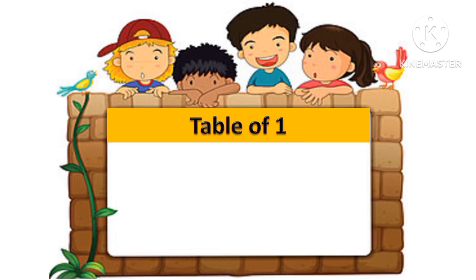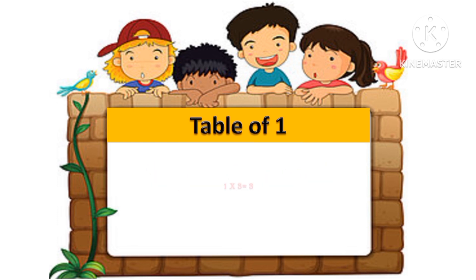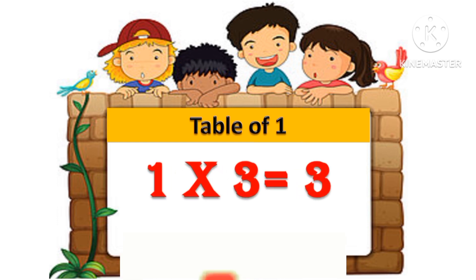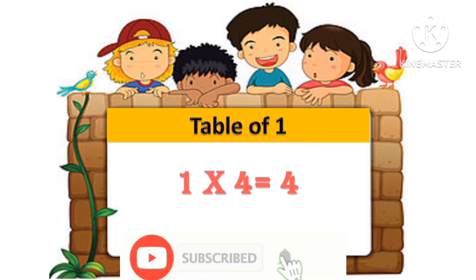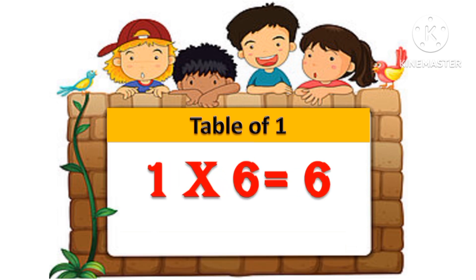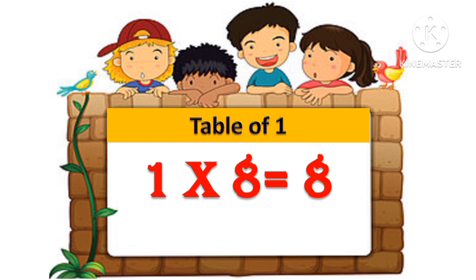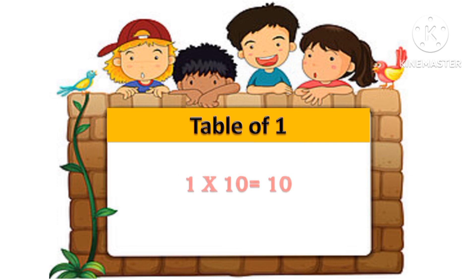Table of 1: 1 one is 1, 1 two's are 2, 1 three's are 3, 1 four's are 4, 1 five's are 5, 1 six's are 6, 1 seven's are 7, 1 eight's are 8, 1 nine's are 9, 1 ten's are 10.